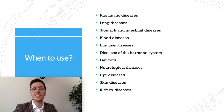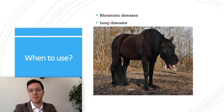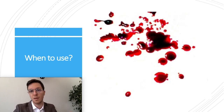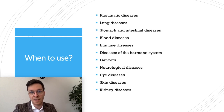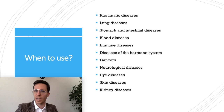For rheumatic diseases it can be used to treat rheumatic arthritis. For lung diseases it can be used for COPD or asthma. In stomach or intestinal diseases it can be used to treat Morbus Crohn or ulcerative colitis, and there are many more use cases. Prednisone can also be used in blood diseases, immune diseases, diseases of your hormone system, cancer, neurological diseases, eye diseases, skin problems, and even kidney problems. So there is a wide range of diseases where prednisone can be used.